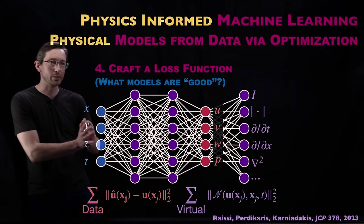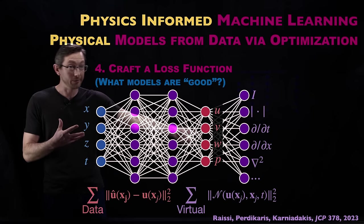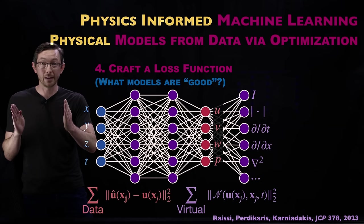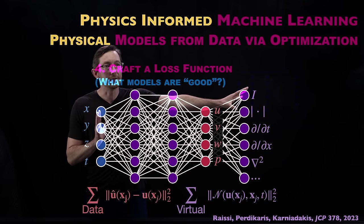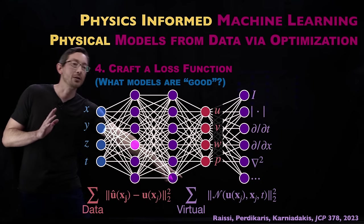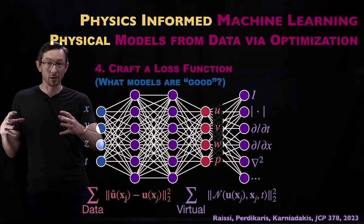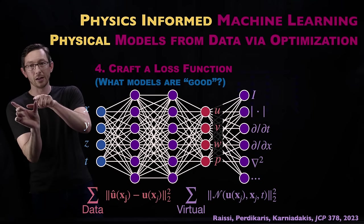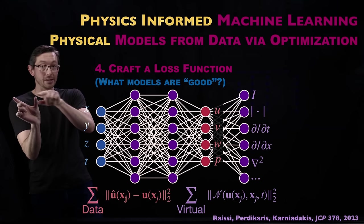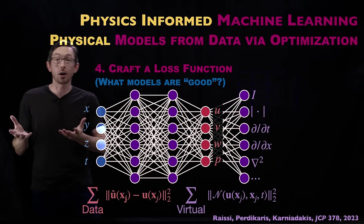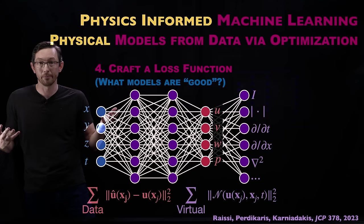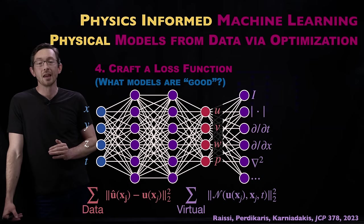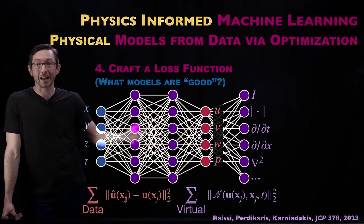So you build a feed-forward network that can predict these flow field quantities, but in addition to the naive data-fit loss, you can compute partial derivatives of those outputs with respect to the inputs, and add a loss term which is literally the norm of the partial differential equation. If that PDE is not satisfied — not equal to zero — this error is large, meaning you're not satisfying the physics well. This allows you to train models with way less data, and they tend to be much more accurately representing the physics.